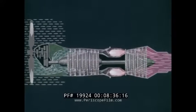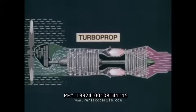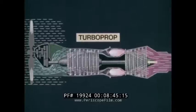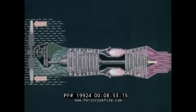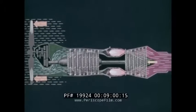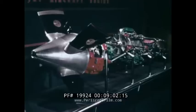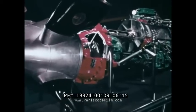Another modification has the gas turbine combined with a propeller, producing the turboprop engine. Its turbine extracts a much greater portion of the energy from the gas to drive the compressor, accessories, and propeller. The engine incorporates a gear train that reduces the high speed of the turbine shaft to the relatively low speed of the propeller, which produces most of the thrust. Turboprop engines are well suited for long range flights at moderate air speeds.